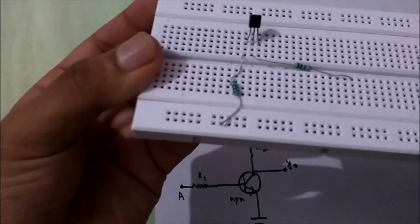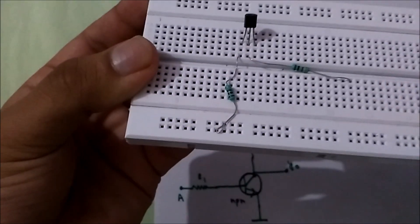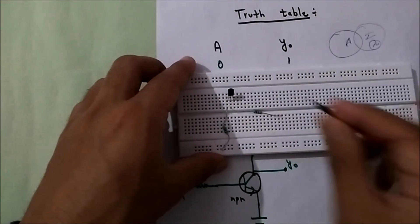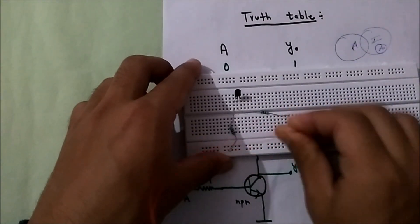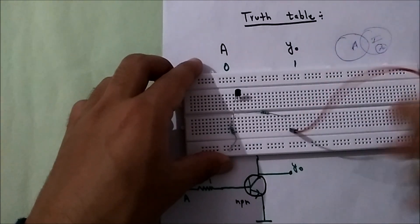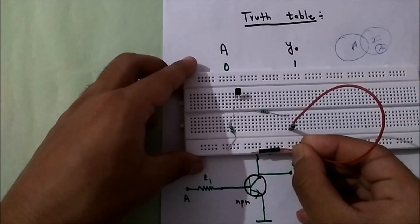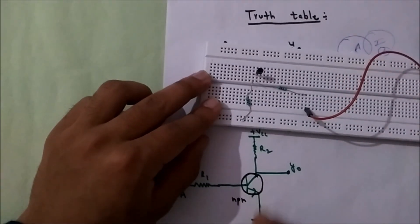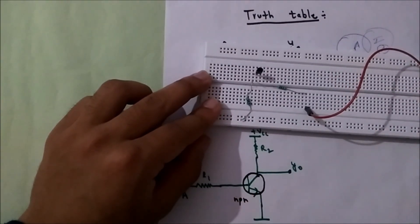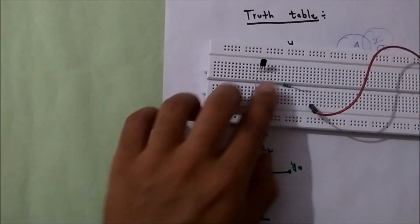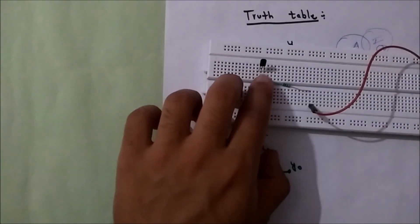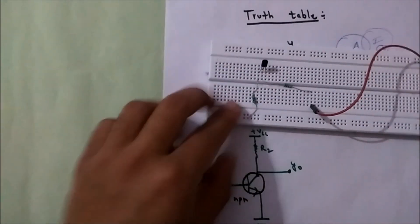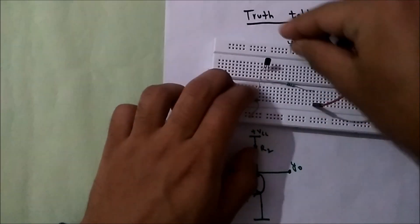This is the resistor which goes from base. To give logic, I'll connect a simple jumper wire here so that I can either connect it to one or to zero. The emitter is directly grounded — the third terminal here is collector, base, and emitter.